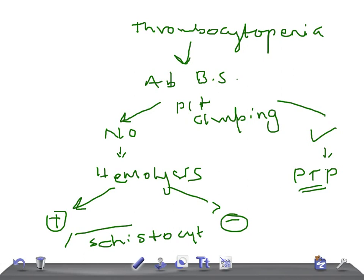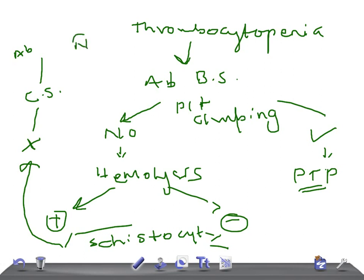If hemolysis is present, look for schistocytes — they can be either present or absent. If schistocytes are present, then look for coagulation studies. If coagulation studies are abnormal, it's again DIC — DIC has a very variable presentation. If coagulation studies are normal, then it can be TTP — thrombotic thrombocytopenic purpura — or HUS, hemolytic uremic syndrome.